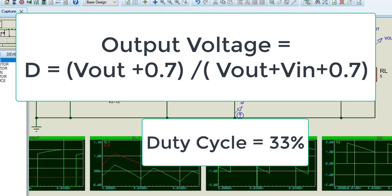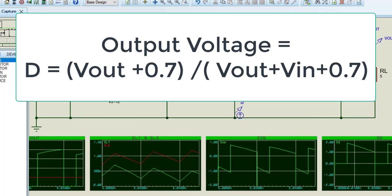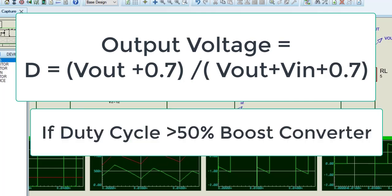In other words, if we provide a 33% duty cycle to MOSFET, the output voltage will be about 5 volts. Because duty cycle is less than 50%, the circuit will behave like a buck converter. Similarly, if we apply duty cycle more than 50%, output voltage will be greater than input voltage and circuit will behave like a boost converter.